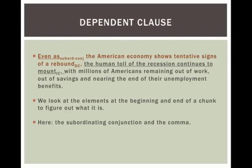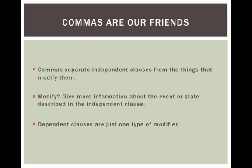For dependent clauses: they begin with subordinating conjunctions and they end with commas when they're at the beginning of the sentence. Commas separate independent clauses from things that modify them. Modifiers give more information about the event or state described in the independent clause, or more about the thing described in nouns. We'll get to nouns in Lecture 3. So we think about a dependent clause as just one type of modifier — it adds more information about the basic event or state described in the independent clause.